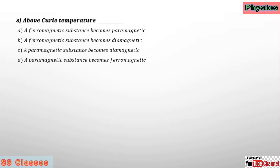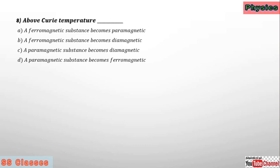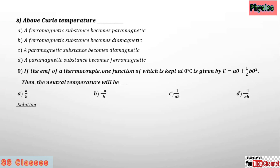Above the Curie temperature, a ferromagnetic substance becomes paramagnetic. That is the answer.